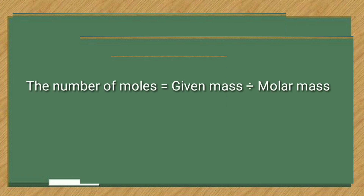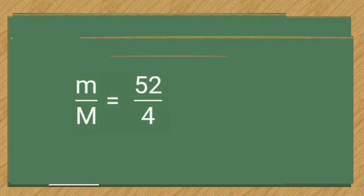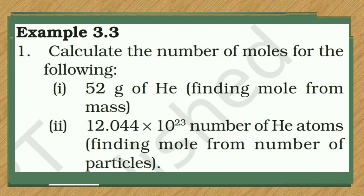For part (a): 52 grams of helium. The formula is: number of moles n = given mass m ÷ molar mass M. The molar mass of helium is 4. So n = 52 ÷ 4 = 13. Therefore, 13 moles are present in 52 grams of helium.